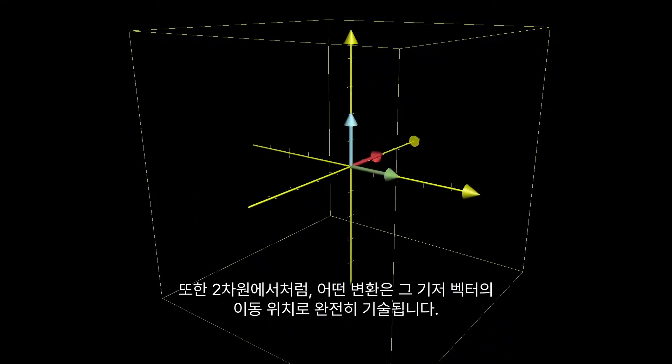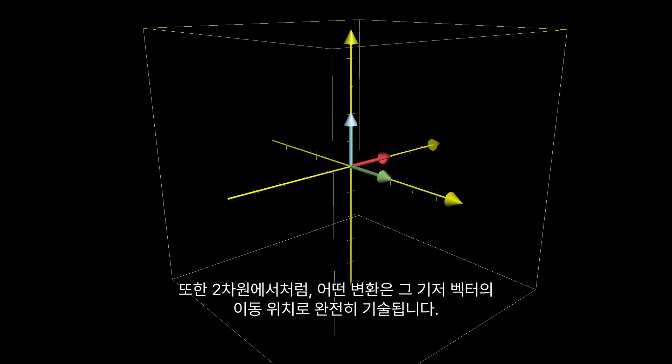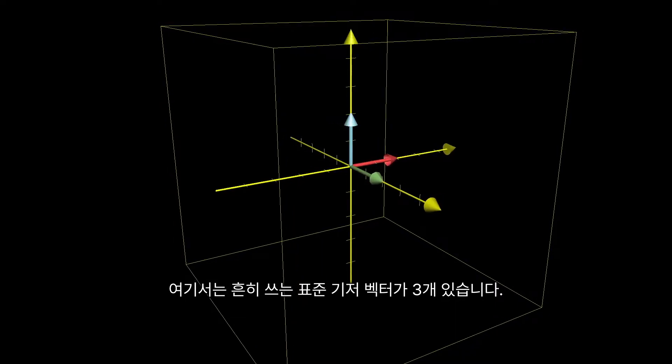And just as with two dimensions, one of these transformations is completely described by where the basis vectors go. But now, there are three standard basis vectors that we typically use: the unit vector in the x-direction, i-hat, the unit vector in the y-direction, j-hat, and a new guy, the unit vector in the z-direction, called k-hat.